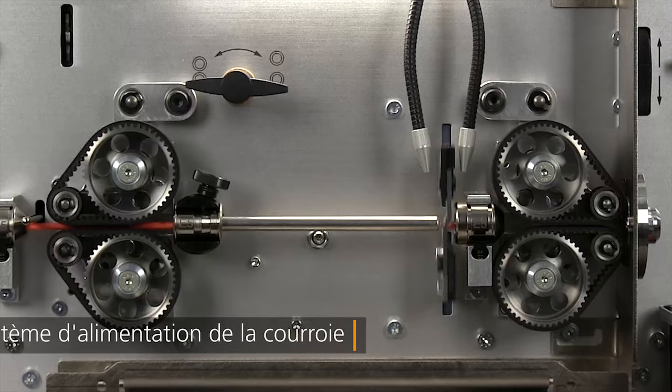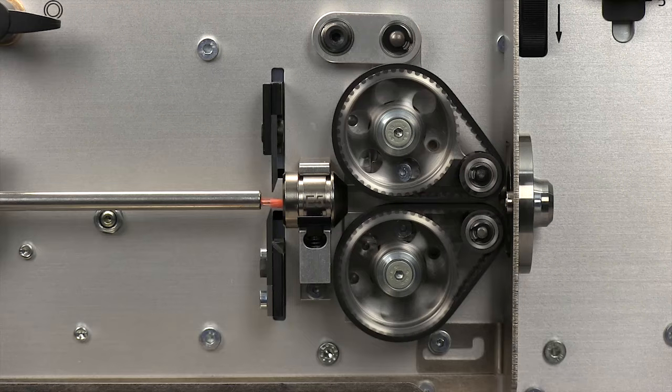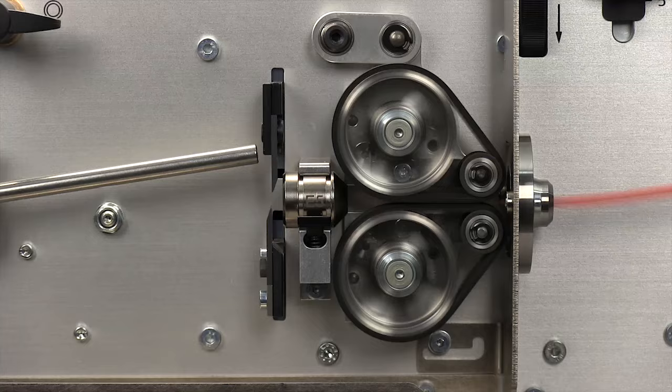Disponible avec un système de traction de rouleau ou bande, la configuration peut être changée facilement par l'opérateur. Le système de traction de bande est unique car vous avez le choix entre trois positions pour augmenter les applications possibles.